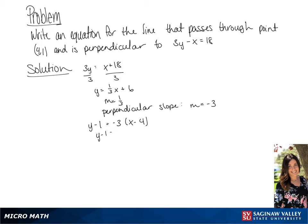If we multiply this out we get y minus 1 equals negative 3x plus 12. Now we're going to add one to each side giving us y equals negative 3x plus 13.